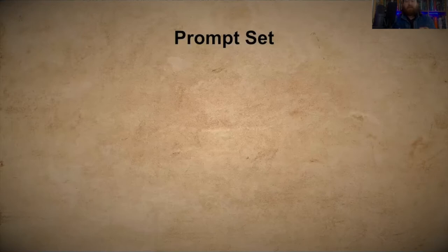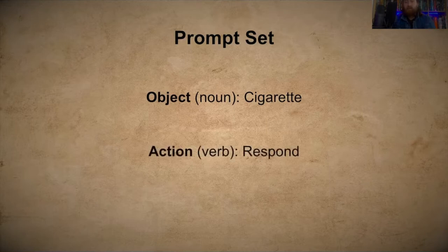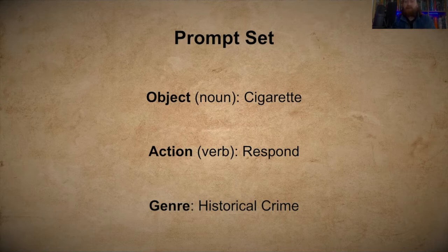First of all, I go on randomwordgenerator.com and generate some words for the prompt. I generate an object or a noun, and an action or a verb. Then I think of a genre that the words I've generated would fit well in for a story. You can see the words cigarette, respond, and historical crime. I generated 'cigarette' and 'respond' for episode two of Flash Fiction Friday, 'Listening to the Crime Scene,' which I'll link below. I'll be using that story throughout this presentation.